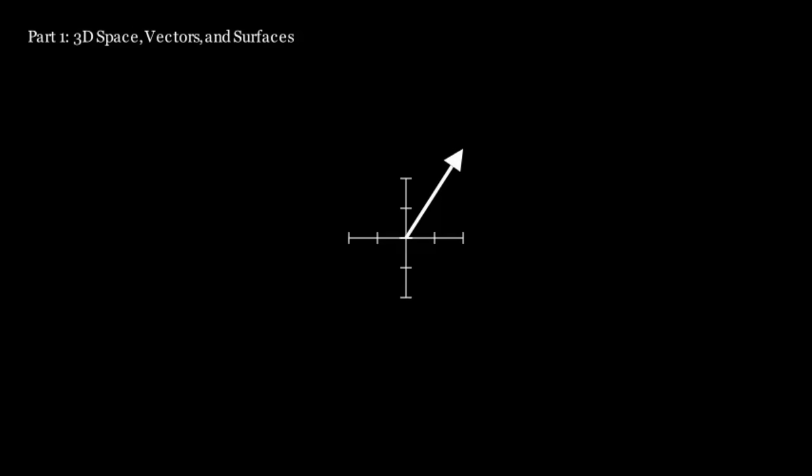Vectors are quantities with direction and magnitude. This also applies to 3D vectors, just their direction is three-dimensional.